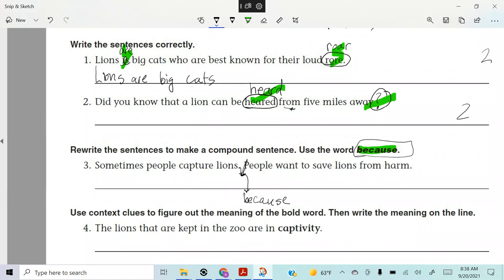Could you do because. We could start with this one right here, ready? Could you do because people want to save lions from harm, comma, sometimes people capture. No, that doesn't work. I don't know. I think the way we've got it is pretty good.